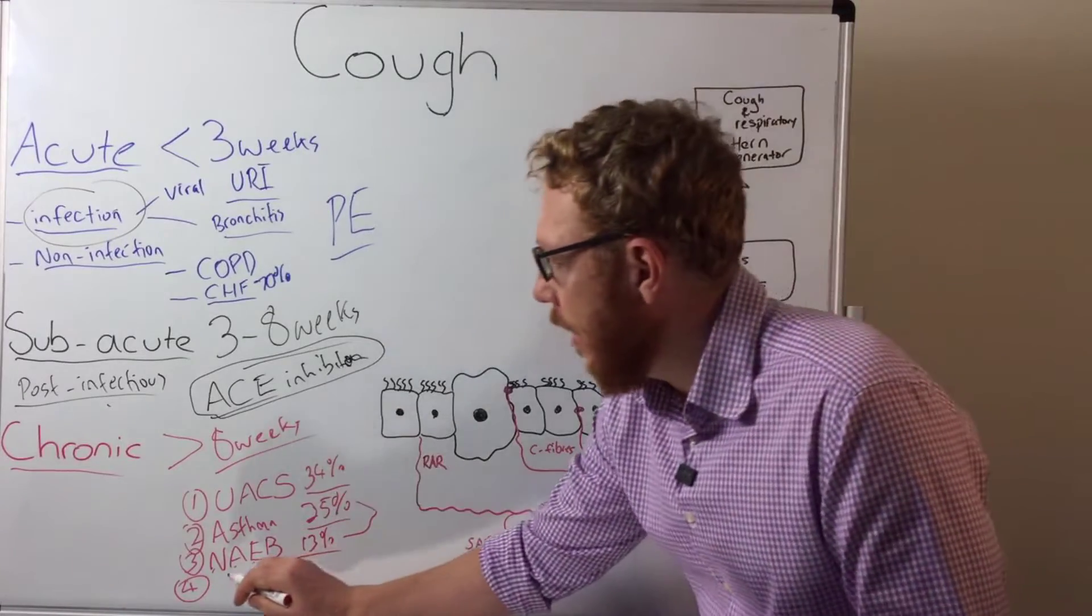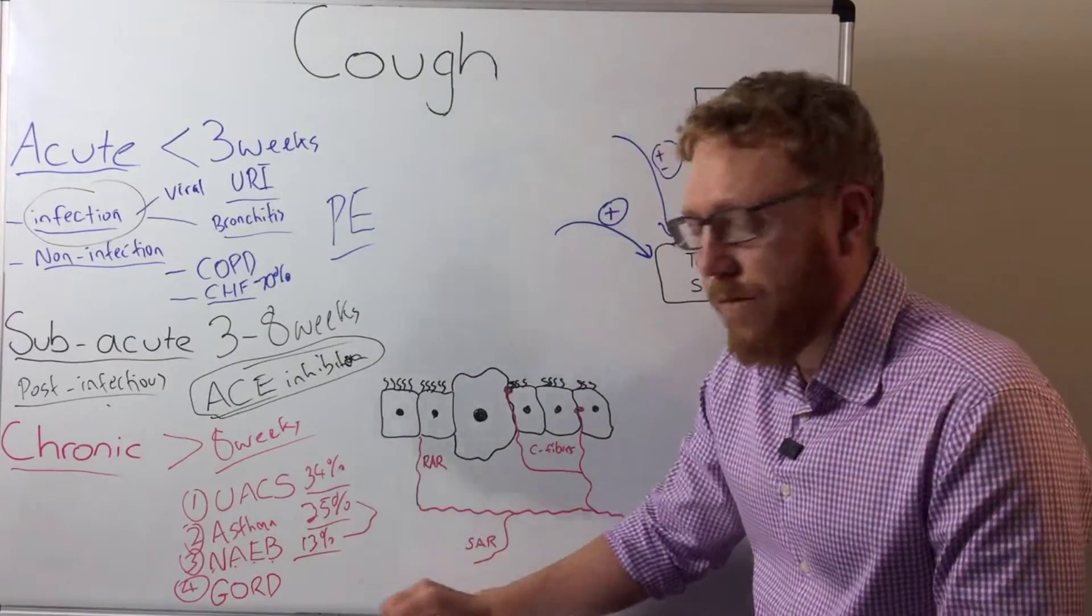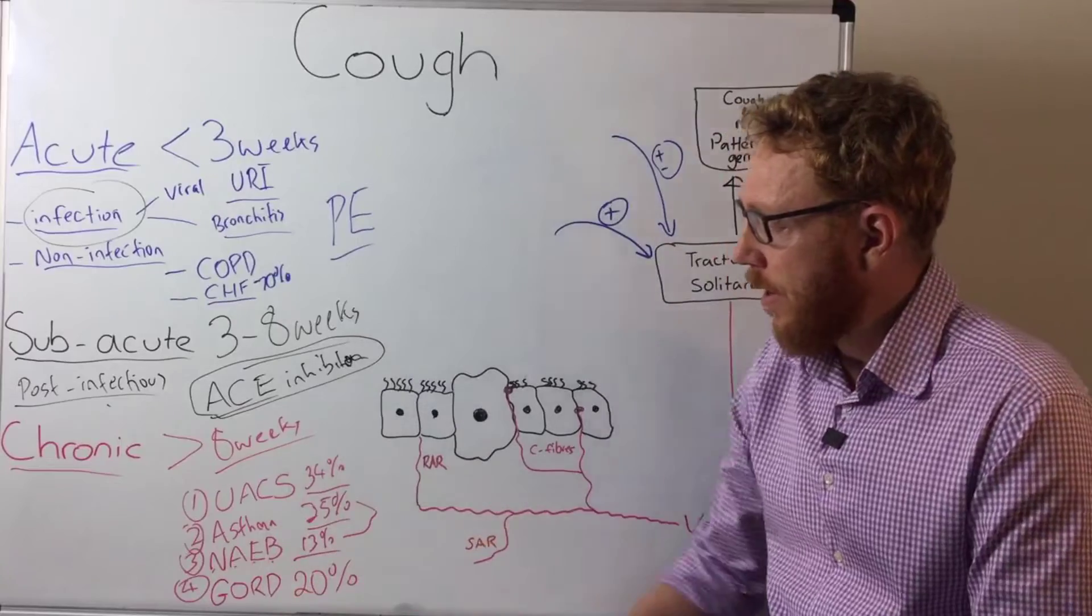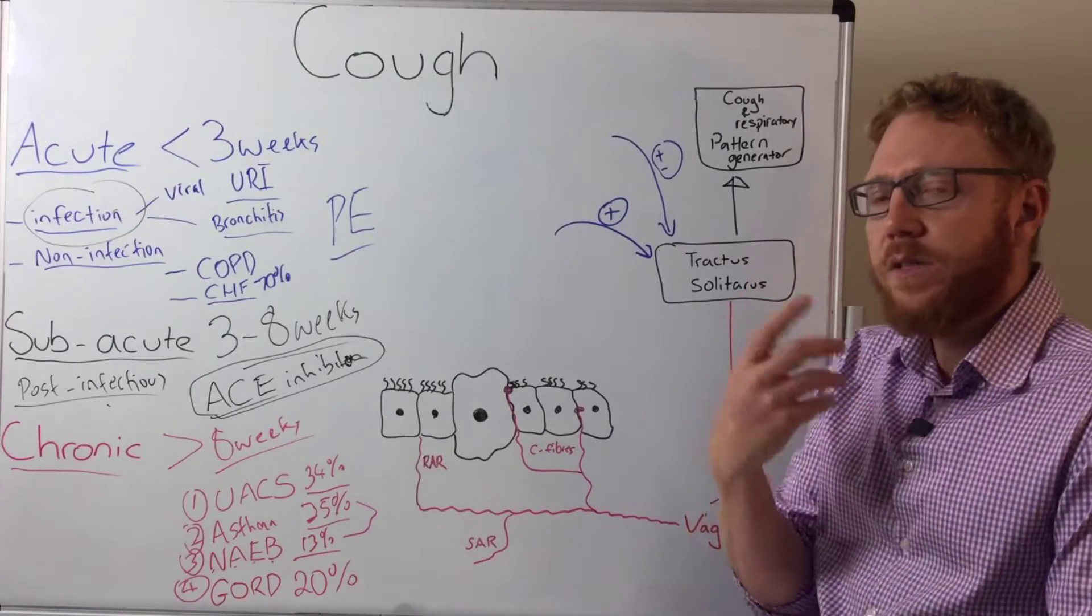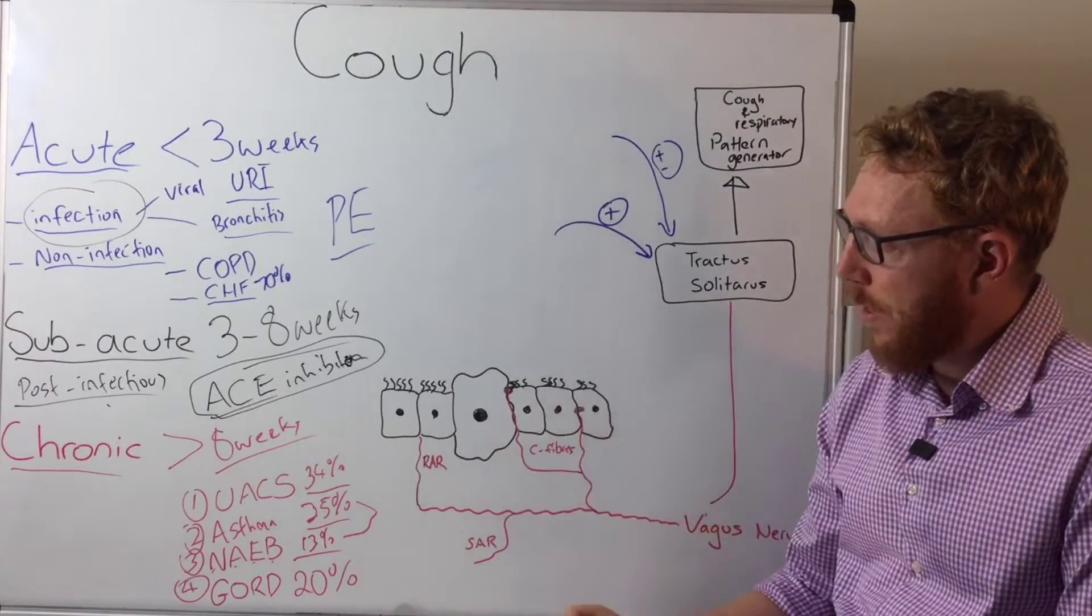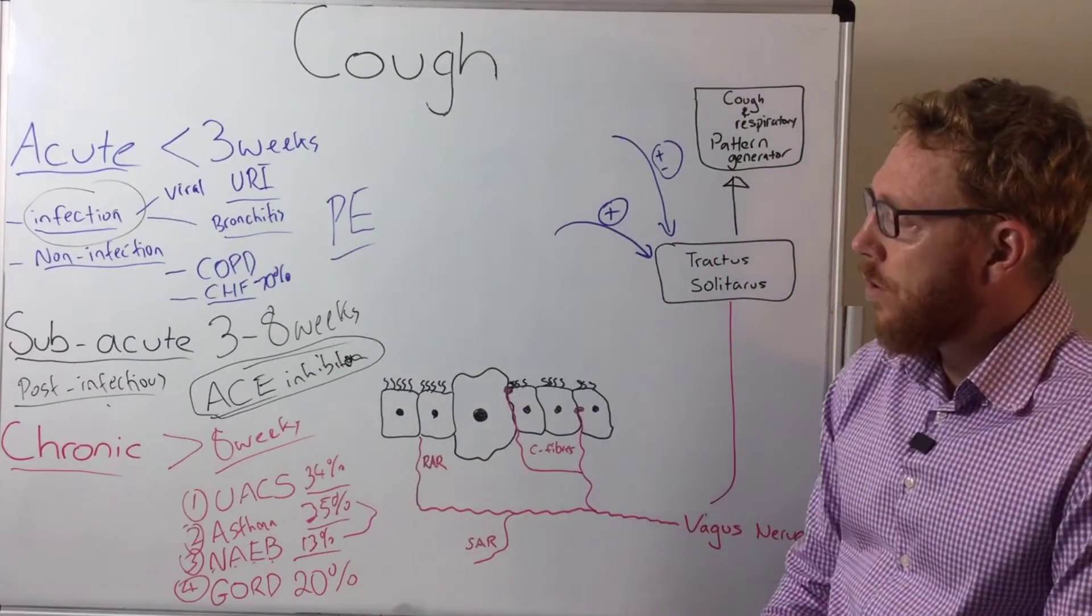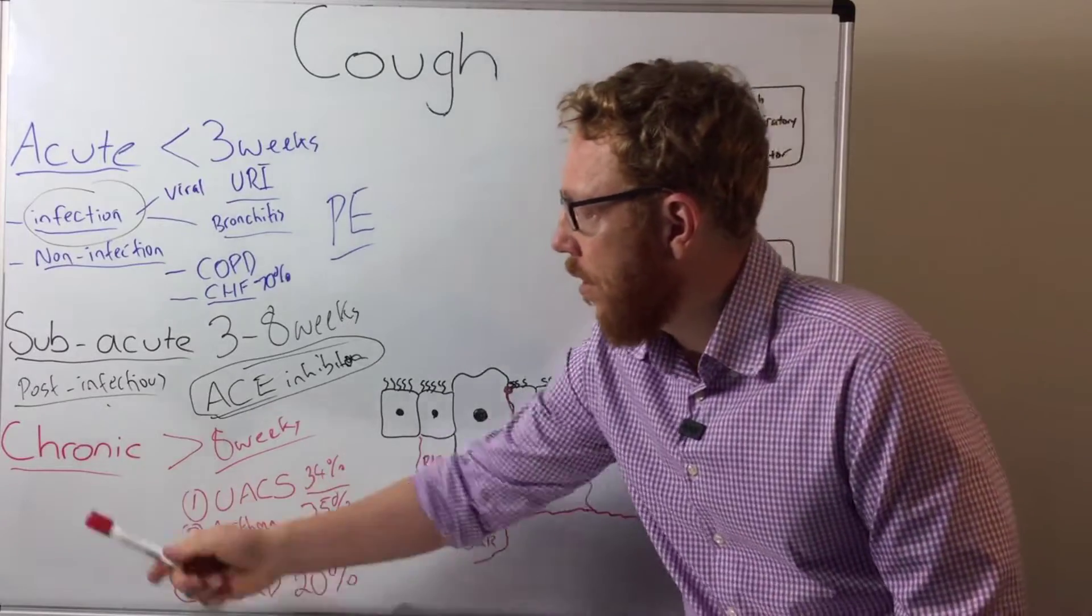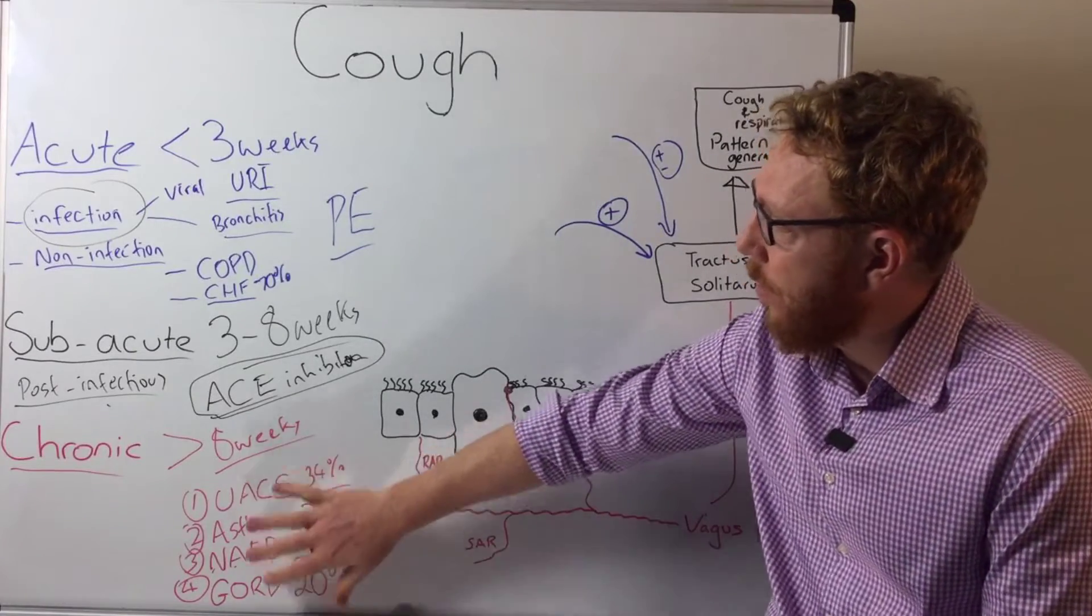Finally we have GERD or GURD in America, so that's essentially gastroesophageal reflux disease and about 20% of people with chronic cough will be this phenotype. What's essentially happening is we've got stomach acids coming up regurgitating up the esophagus which is then causing irritation not only to the esophagus but to the upper airways which is causing sensitization, inflammation to these receptors which is leading to the cough. So these are basically the four main causes of a chronic cough.